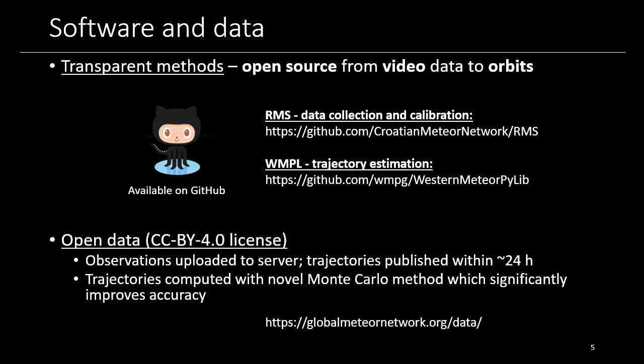As for the software, it is completely transparent and open source. RMS — the Raspberry Pi Meteor Station software — is available on GitHub, and it does data collection and calibration. The data from the station then gets uploaded to the server, where our trajectory estimation software is running. Within about 24 hours, all trajectories are published on our website, computed using a tested method.